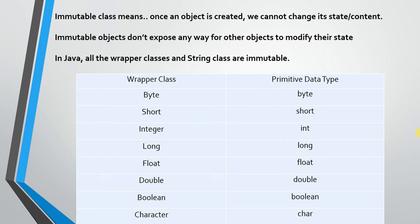Looking at this table, these are the wrapper classes and their corresponding primitive data types. We can create objects for the wrapper classes but not for primitive data types. The wrapper classes in Java are: Byte, Short, Integer, Long, Float, Double, Boolean, and Character.